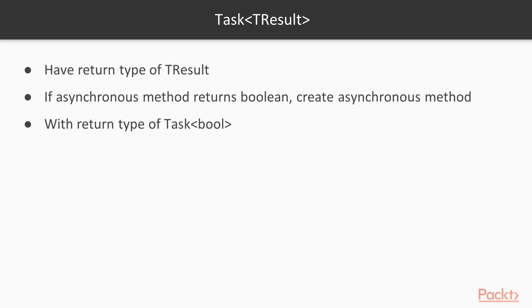Finally, asynchronous methods that have a return statement have a return type of Task<T> result. In other words, if the asynchronous method returns a boolean, you would create an asynchronous method with a return type of Task<bool>.